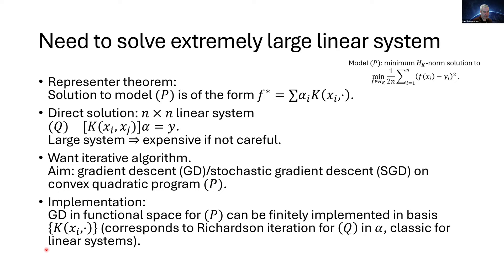To put gradient descent in context: the original problem is in this infinite-dimensional space, but we want to understand the behavior of gradient descent there. The algorithm has a parallel formulation in the finite-dimensional formulation in the basis of K_{X_i}(·), where I iterate over the parameter alpha instead. Because I'm changing the basis, that's not quite gradient descent — it corresponds to another well-known algorithm for linear systems called Richardson iteration. It's a classic algorithm for linear systems.